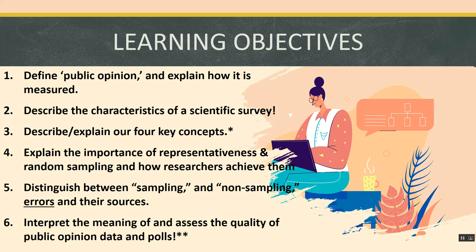Learning objective four asks you to explain the importance of representativeness and random sampling, as well as how researchers achieve them. Number five asks you to distinguish between sampling and non-sampling errors and their sources, and identify examples of each. Finally, the master learning objective is that you need to be able to interpret the meaning of and assess the quality of public opinion data and polls — what you can and cannot conclude, what problems might undermine reliability, and how those problems might skew results.